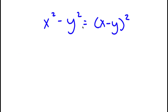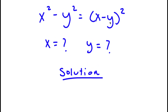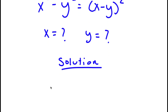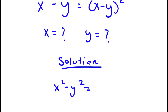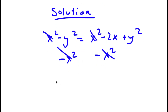In this problem, I have x squared minus y squared equals x minus y squared, and I want to find the values of x and y. I'll start by expanding x minus y squared, which equals x squared minus 2xy plus y squared. Subtracting x squared from both sides, I'm left with negative y squared equals negative 2xy plus y squared.